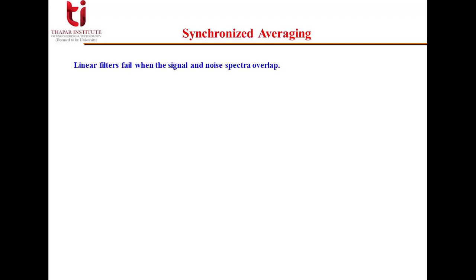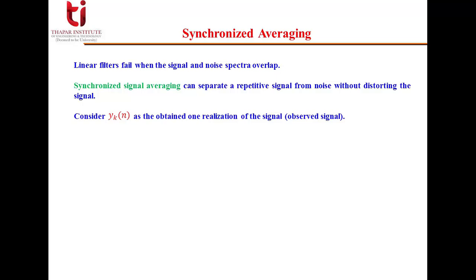Now the first example in time domain filtering is the synchronized averaging. Linear filters fail when the signal and noise spectra overlap.